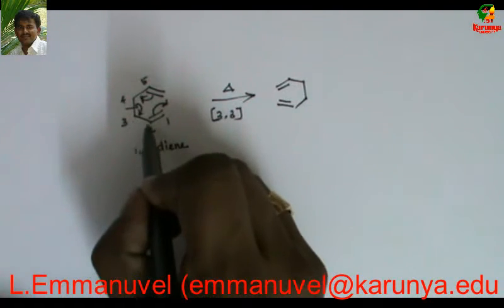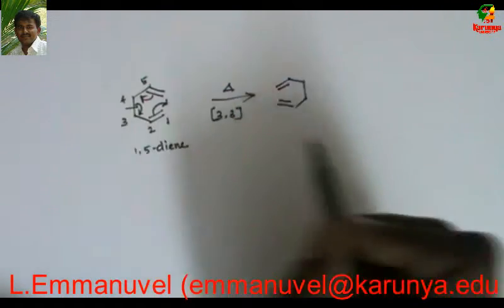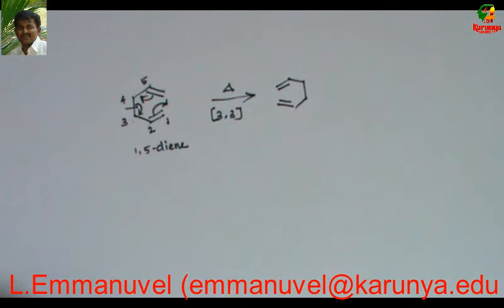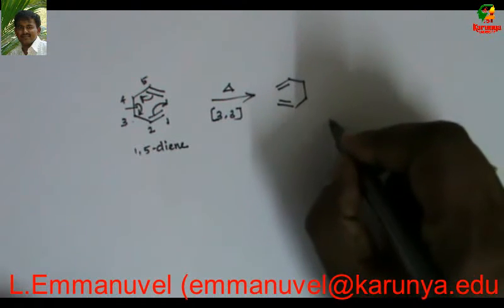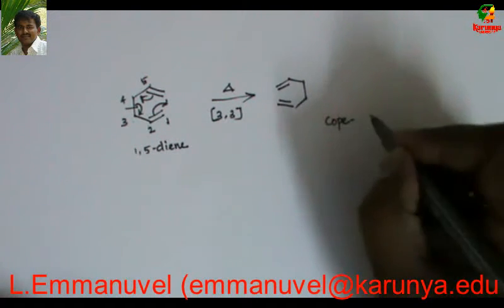If you go for numbering, 1, 2, 3, 1, 2, 3. So it is 3,3-sigmatropic rearrangement. This reaction is known as cope rearrangement.